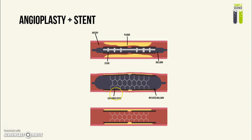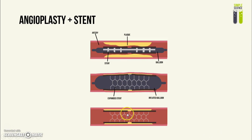Another method would be angioplasty without a stent. The balloon just comes in, gets inflated, and then it is removed. However, the flaw of that method is that there is nothing to keep the plaque in its position, so the plaque wouldn't be constantly pushed against the wall of the coronary arteries.